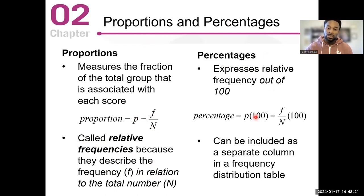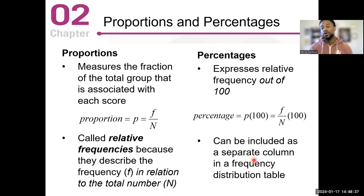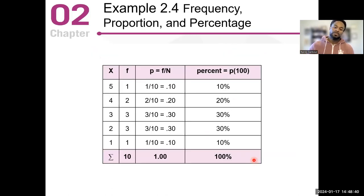You can include a separate column for frequency, a column for the proportion, and a column for the percentages. You can also have a cumulative proportion, a cumulative percentage, and a cumulative frequency, and we'll talk about those.